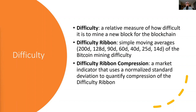So what is the difficulty ribbon compression? It's basically a market indicator that uses a normalized standard deviation to quantify compression of the difficulty ribbon. Basically, it means when the 200-day moving average and the 14-day moving average of difficulty are converging — along with all of the other moving averages in between — this metric will compress and get a smaller value. Typically, when this metric has a smaller value, that has historically been a good time to buy Bitcoin.